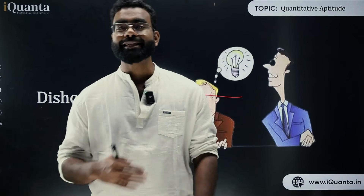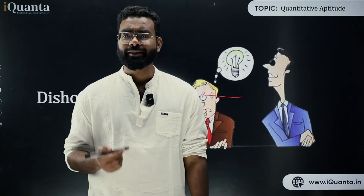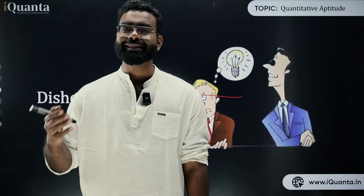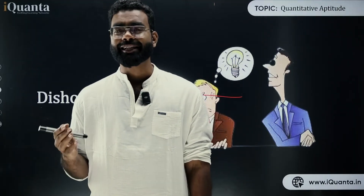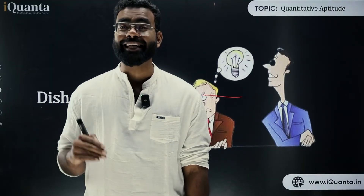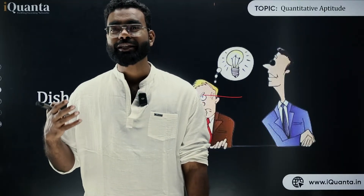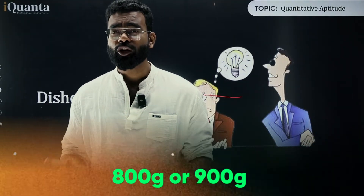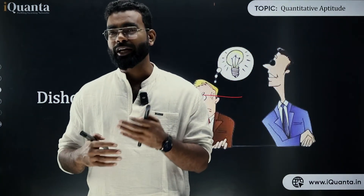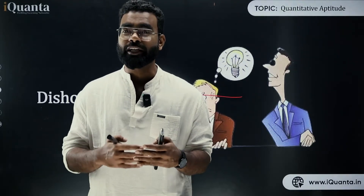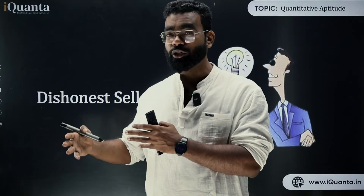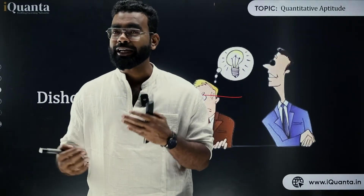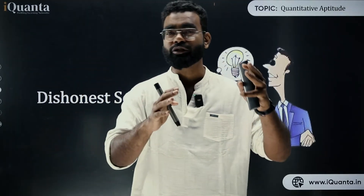Today we will discuss dishonest seller. A dishonest seller is someone like, let's say you are going to a market and they are selling something at less than MRP. But what they are doing is using a trick — they claim to provide you 1 kg but actually give you 800 or 900 grams. They are using a faulty weight balance or meter scale that doesn't show the actual weight or length. This is the concept of dishonest seller: earning profit by manipulating the customer.